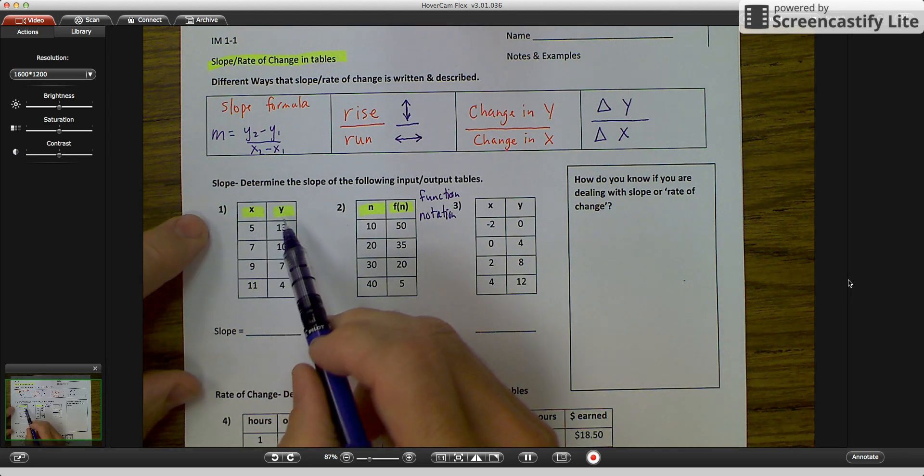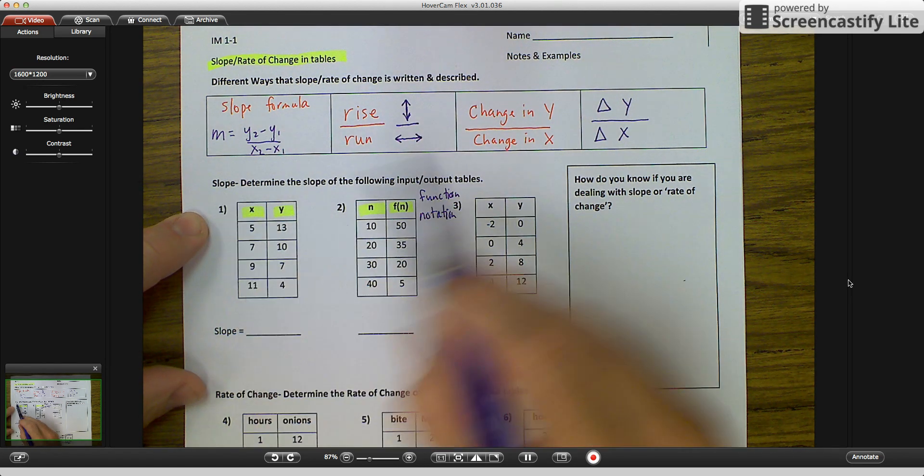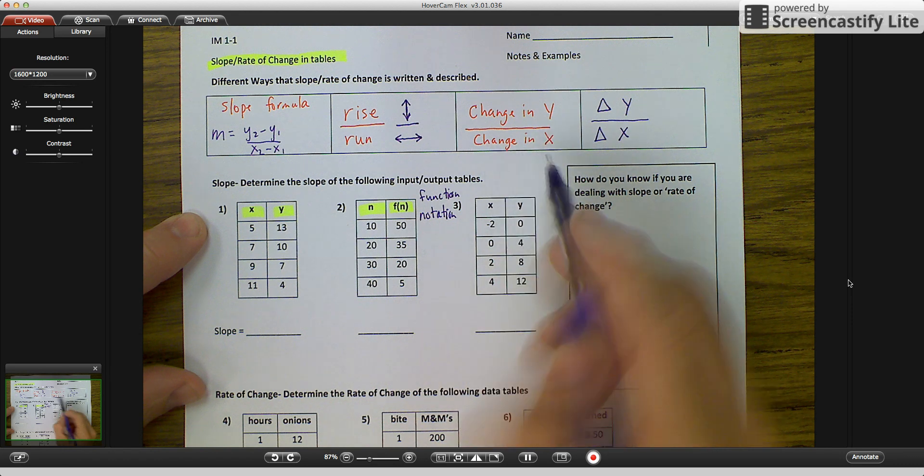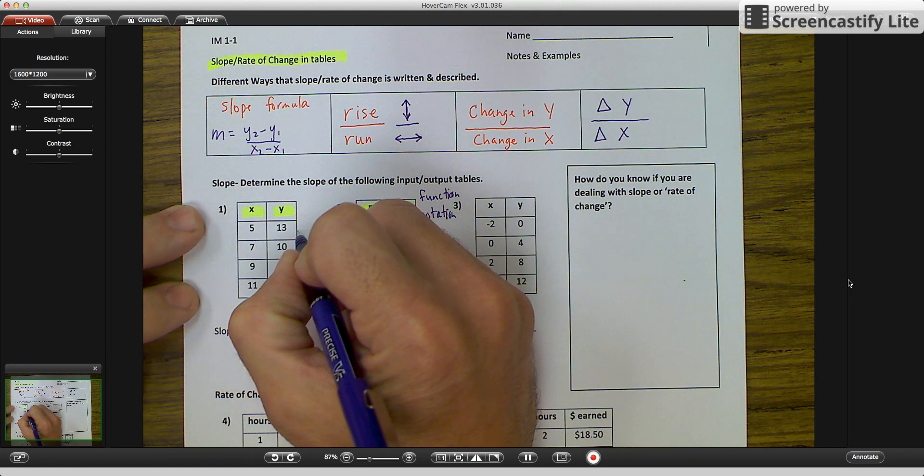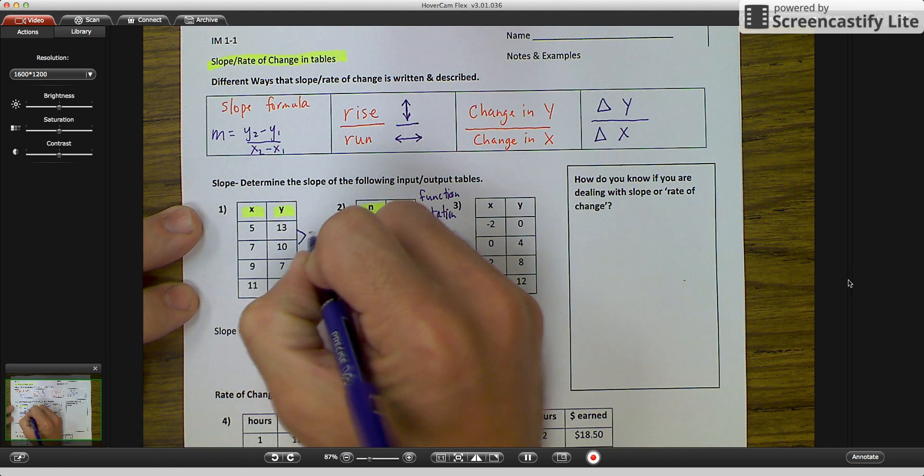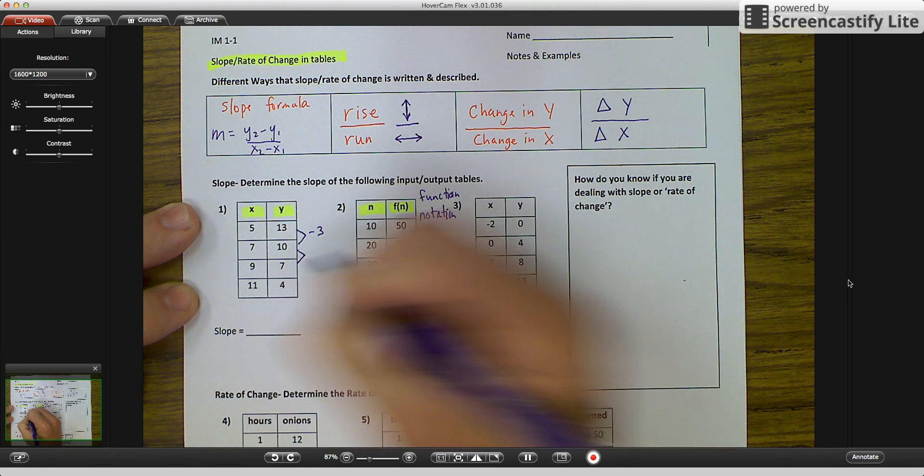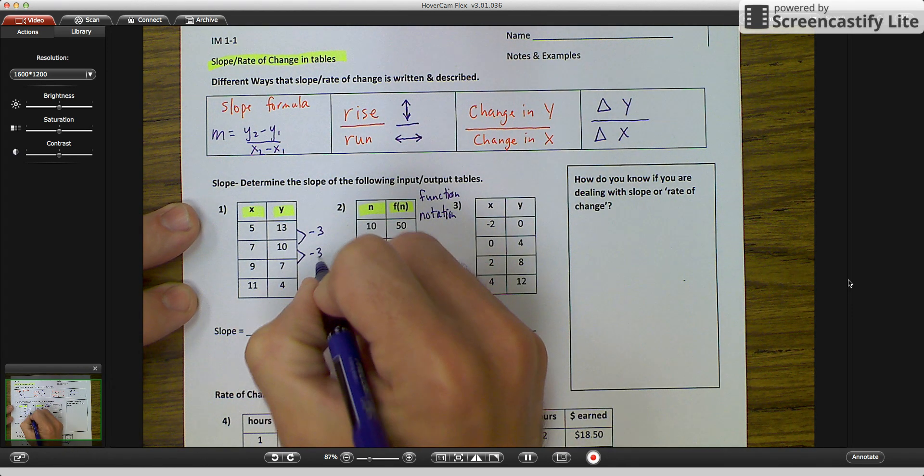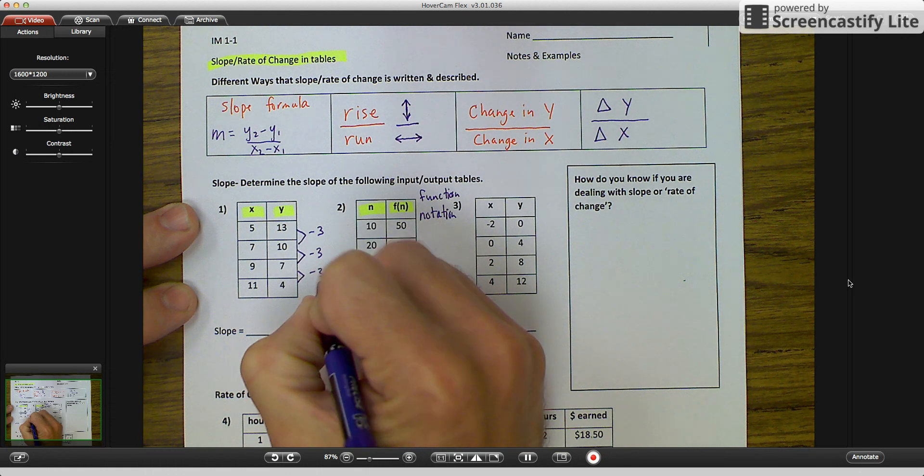So for my x's and y's, I want to determine the slope. And my slope is my change in y's over my change in x's. So I'm going to see what the change in y's is. I go from 13 to 10, that's a negative 3. My change from 10 to 7 is a negative 3, and 7 to 4 is a negative 3.